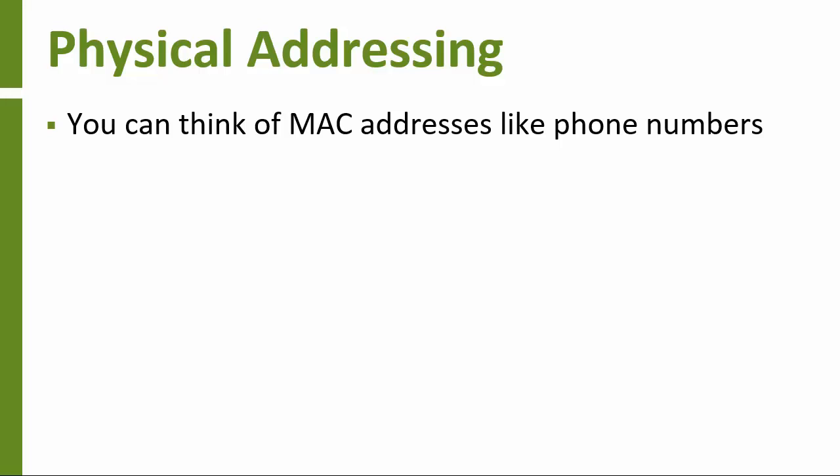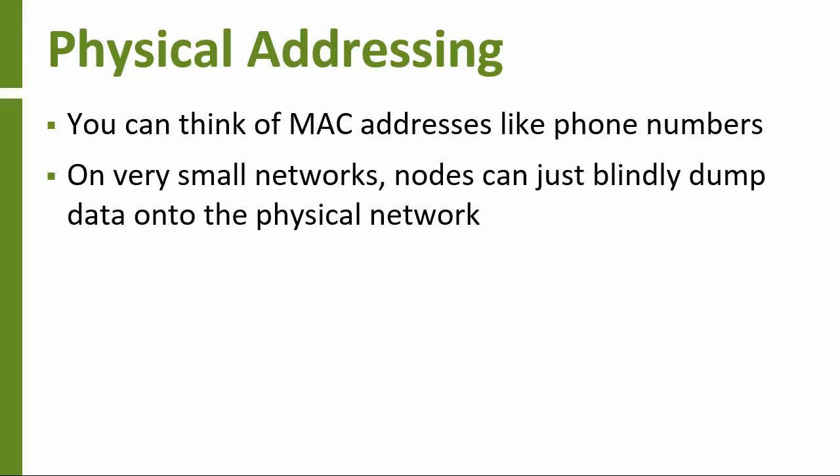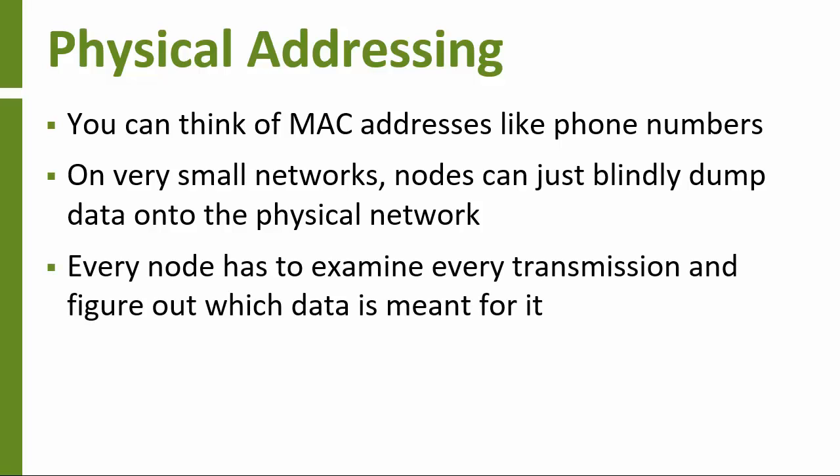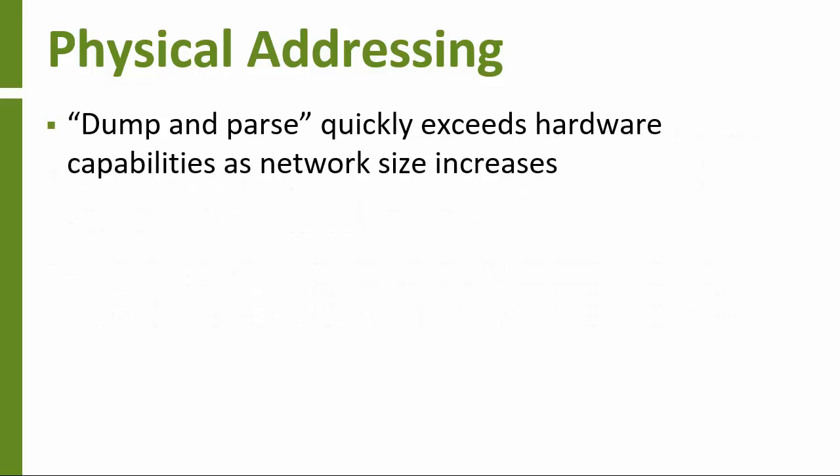On a small and simple network, a computer can just dump data directly onto the physical network. Every computer on the network examines every bit of data that goes across and decides which transmissions are meant for it based on its physical address. But what about larger networks? It isn't really possible for every computer to listen to every piece of data going across big networks with thousands of systems.